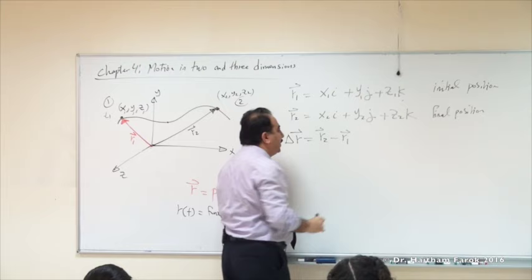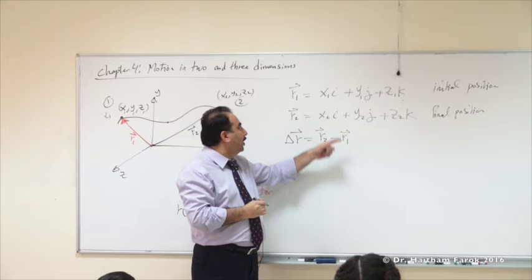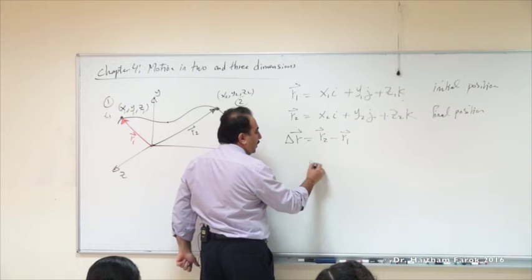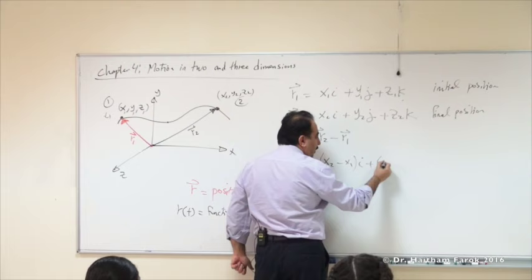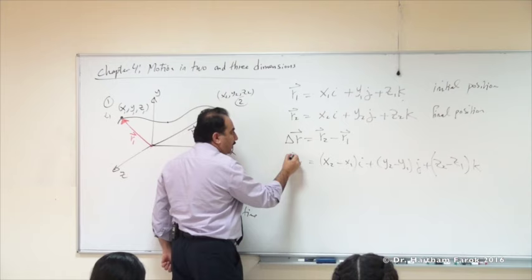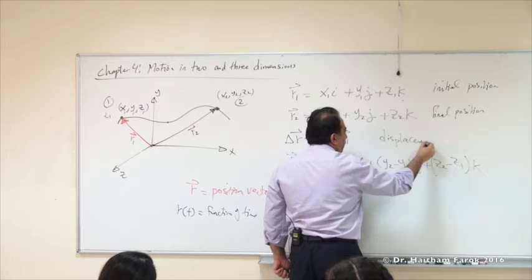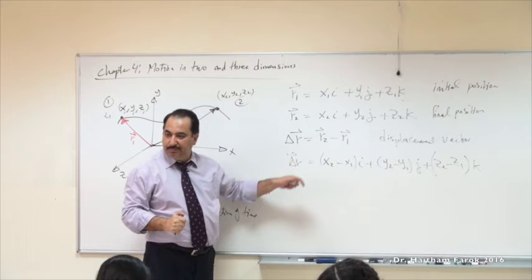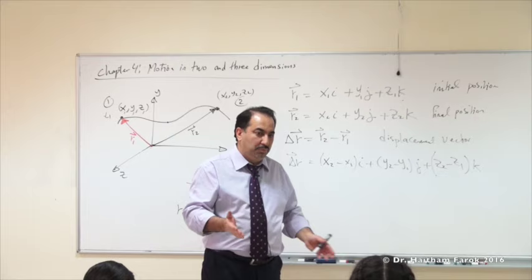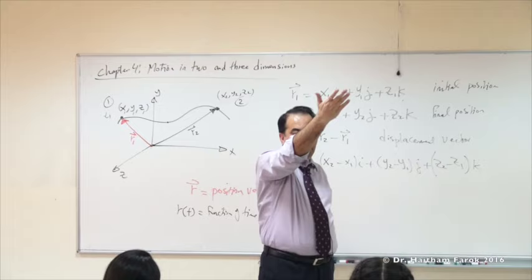If you substitute R2 first minus R1, matching I with I and J with J, what you will find: (X2 - X1)·I + (Y2 - Y1)·J + (Z2 - Z1)·K. This is the displacement vector. Before, displacement was positive or negative. But now it's not positive or negative - it's a vector with I, J, K components.